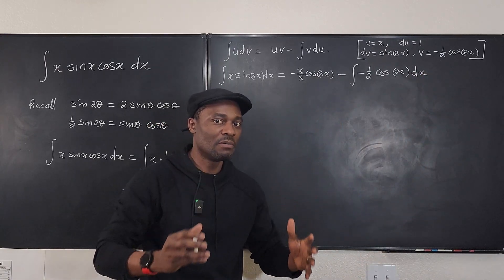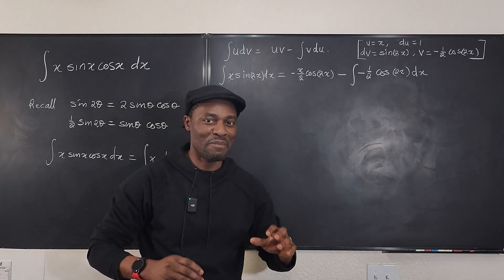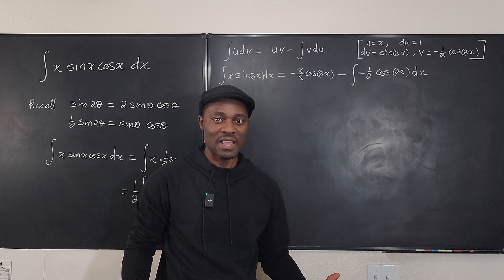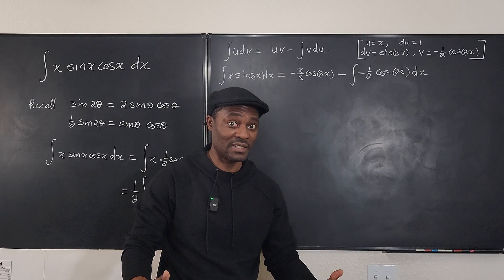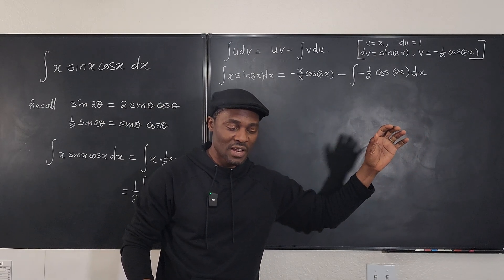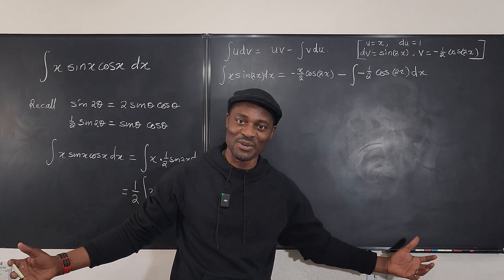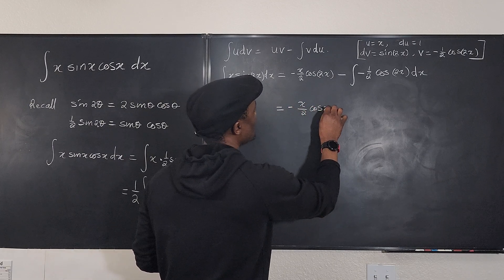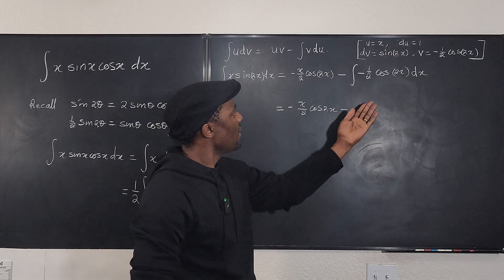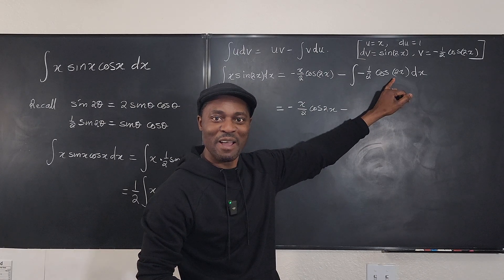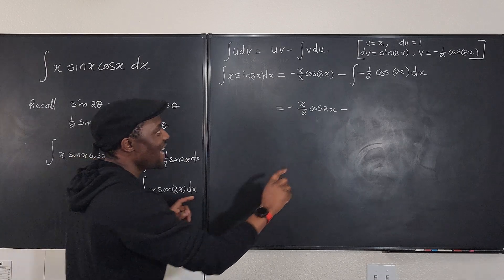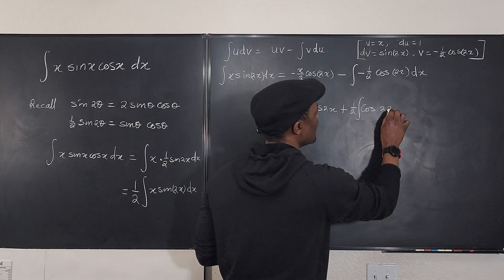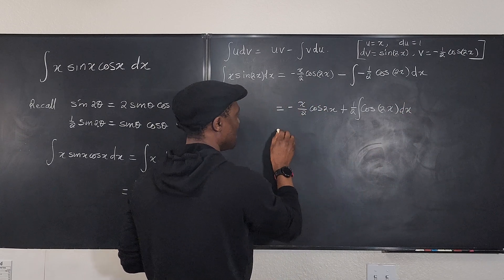Normally I'd use the table method here, but many teachers don't allow that shortcut — though I think they should, once students understand what they're doing. Continuing on: we have −x/2 · cos(2x) minus the integral of −(1/2)·cos(2x) dx. There's no product anymore, just a single function. The negative signs cancel, giving us plus (1/2)·∫cos(2x) dx.